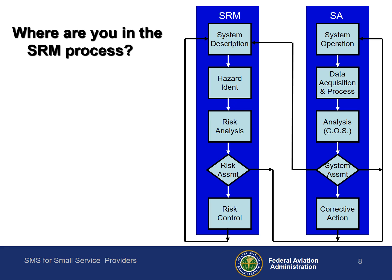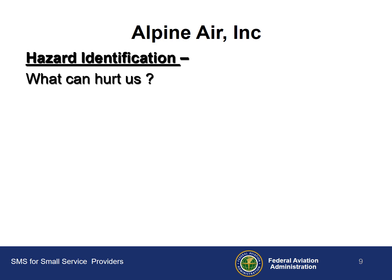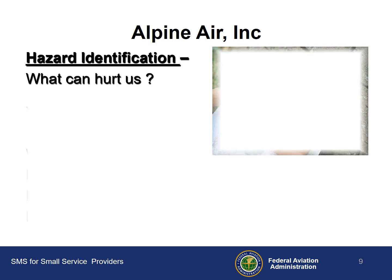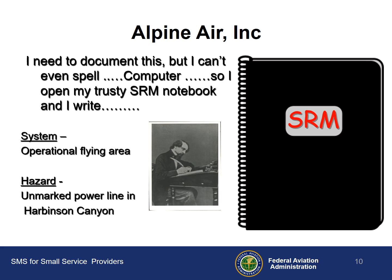So where are you in the SRM process just now? You are describing the system where the hazard resides. What's next? You need to identify the hazard — what's wrong. You ask the questions: who, what, when, where, and so forth. Before you forget, you open your simple SRM notebook and write: system — operational flying area; hazard — unmarked power line in Harbison Canyon.